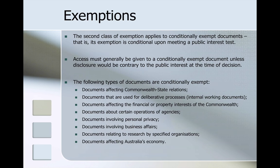The second type of exemption is conditionally exempt documents — the exemption is conditional upon meeting a public interest test. Access must generally be given to a conditionally exempt document unless disclosure would be contrary to the public interest at the time of the decision. Conditionally exempt documents include documents affecting Commonwealth-state relations, documents used for deliberative processes (internal working documents), documents affecting the financial or property interests of the Commonwealth, documents about certain operations of agencies, documents involving personal privacy, documents involving business affairs, documents relating to research by specified organisations, and documents affecting Australia's economy.